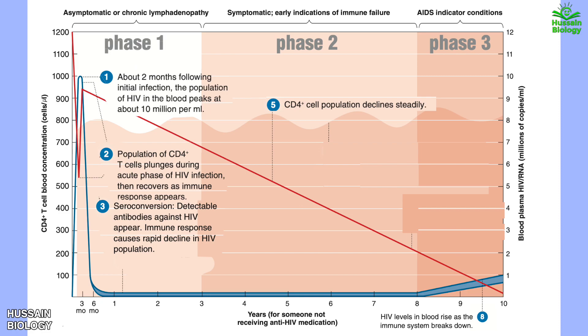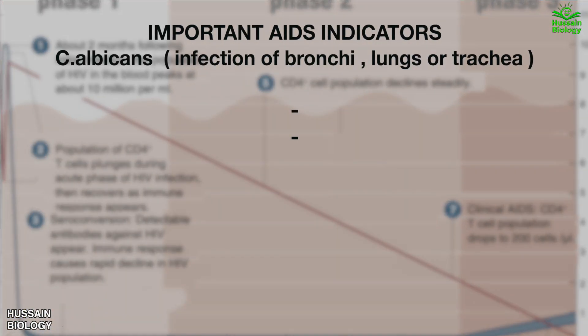At this stage, billions of HIV are generated each day for years, mostly by infected T cells. Then we proceed to phase 3 where clinical AIDS emerges. The CD4+ T cell population drops to 200 cells per microliter of blood, which defines AIDS. Important AIDS indicator conditions appear such as C. albicans infections of bronchi, trachea, or lungs.